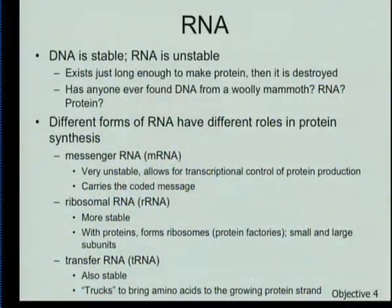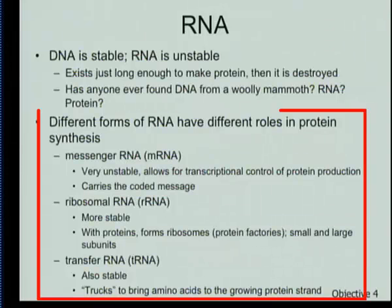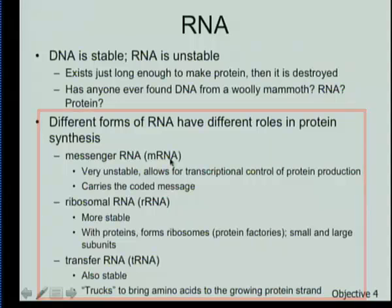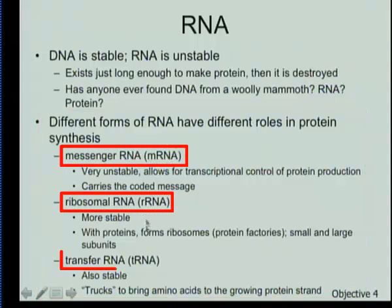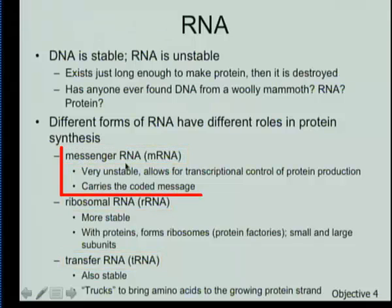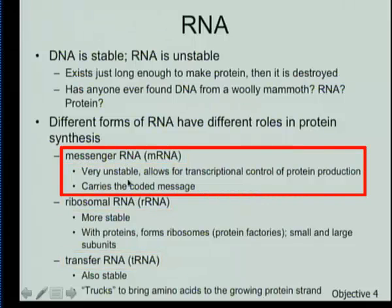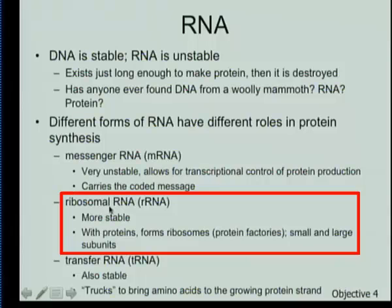There are different types of RNA we need to distinguish. If you look at the letters in front of RNA, you can see a little m, r, or t. The m stands for messenger RNA, which is unstable and carries the coded message from DNA to allow us to produce proteins.